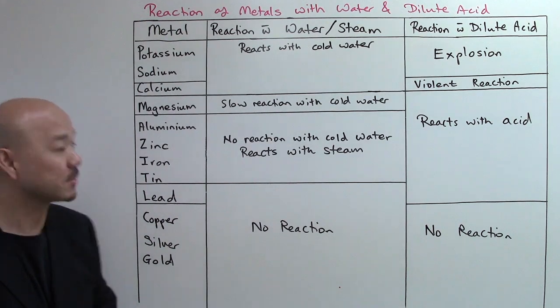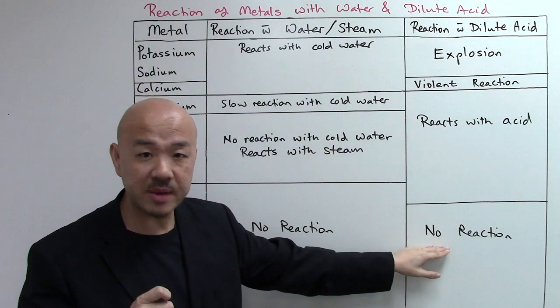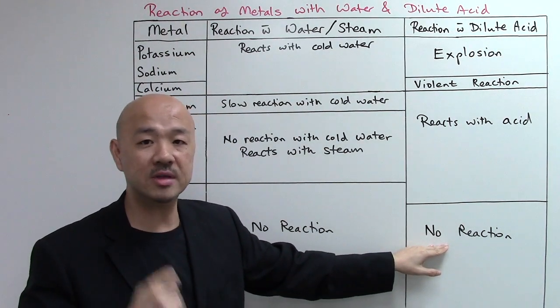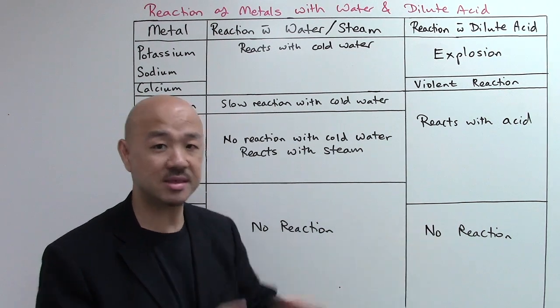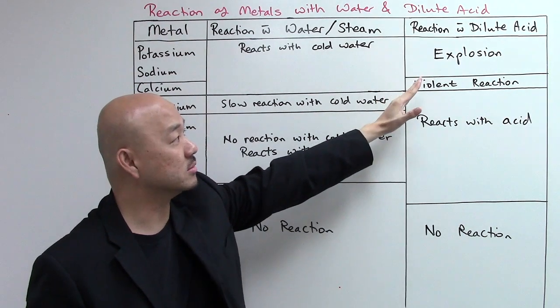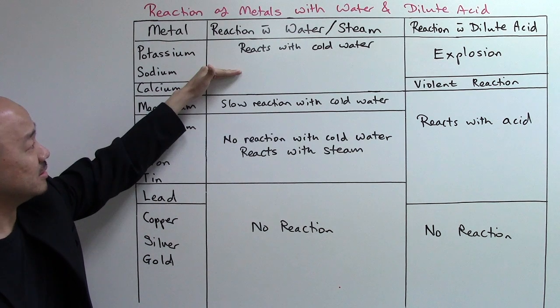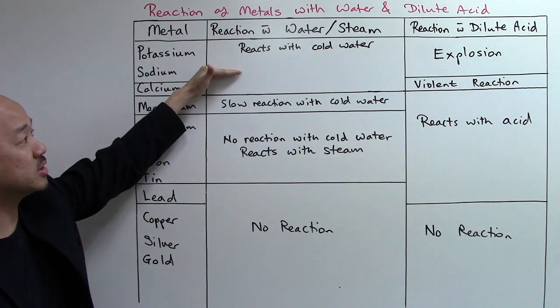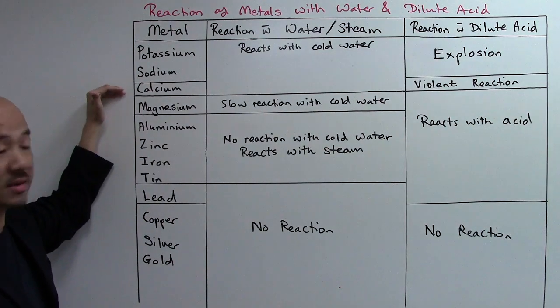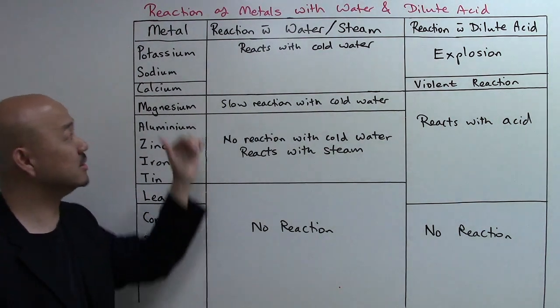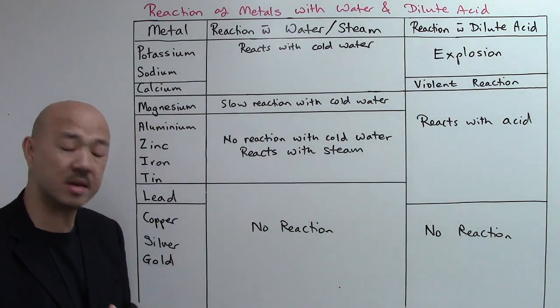For copper, silver, and gold, these three metals are considered unreactive metals because they do not react with dilute acids to form salt and hydrogen gas - there's no reaction at all. That's all about dilute acid with metals. Let's take our attention to this reaction with water or steam. The first three metals in the reactive series are highly reactive and will react with your cold water, which is basically the water in your chemistry laboratory.